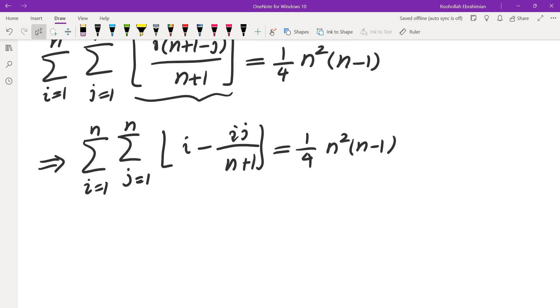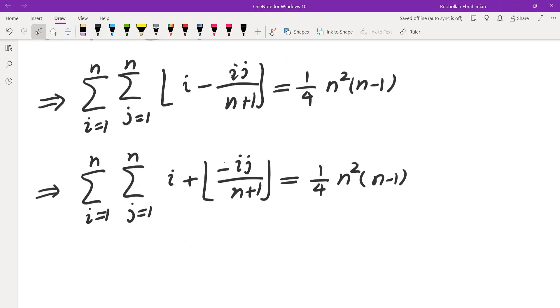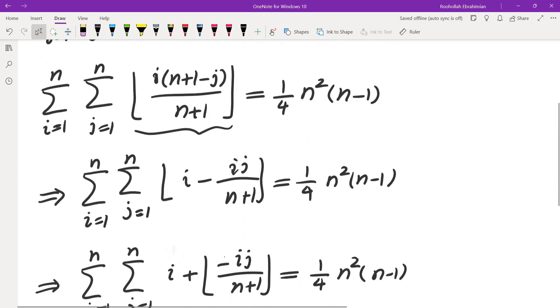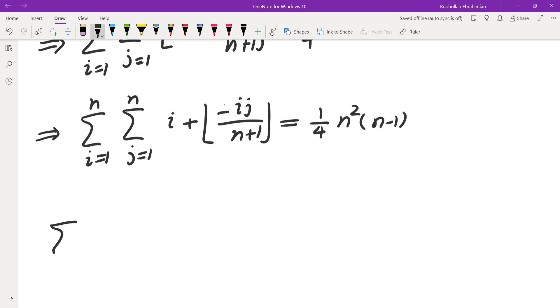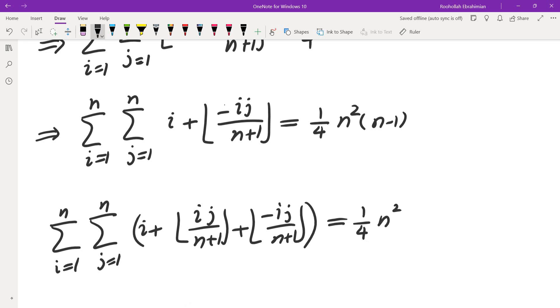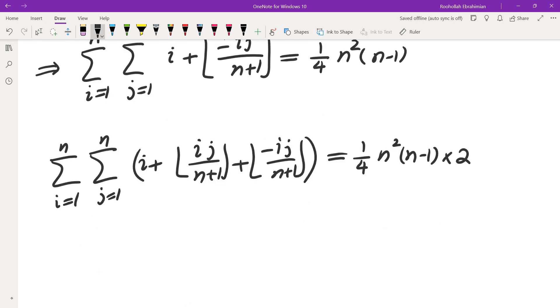Now, the nice thing is that i comes out of the floor. So we get sum i equals 1 to n, j equals 1 to n, i plus floor of minus ij over n plus 1. And that is equal to 1 fourth n squared times n minus 1. Now, I thought about adding the two sums to see what I get. If I add the two, I would get sum i equals 1 to n, sum j equals 1 to n, i plus floor of ij over n plus 1, plus floor of negative ij over n plus 1. And that ends up being 1 fourth n squared times n minus 1. The other one was the same thing, so it's just going to be double.